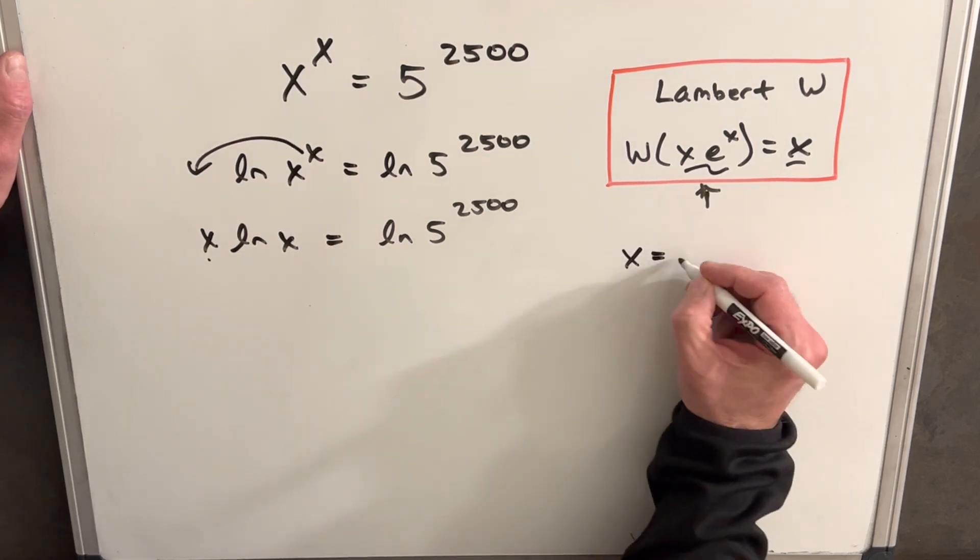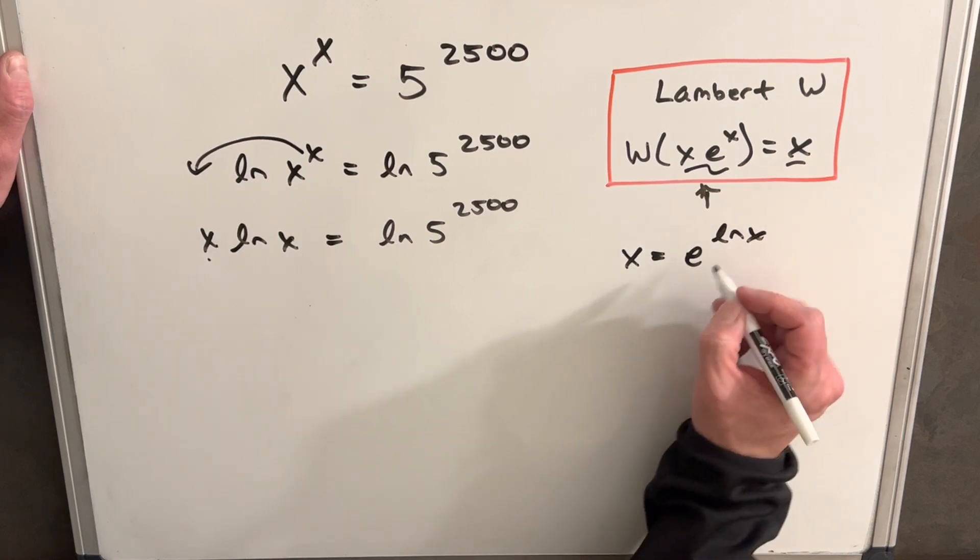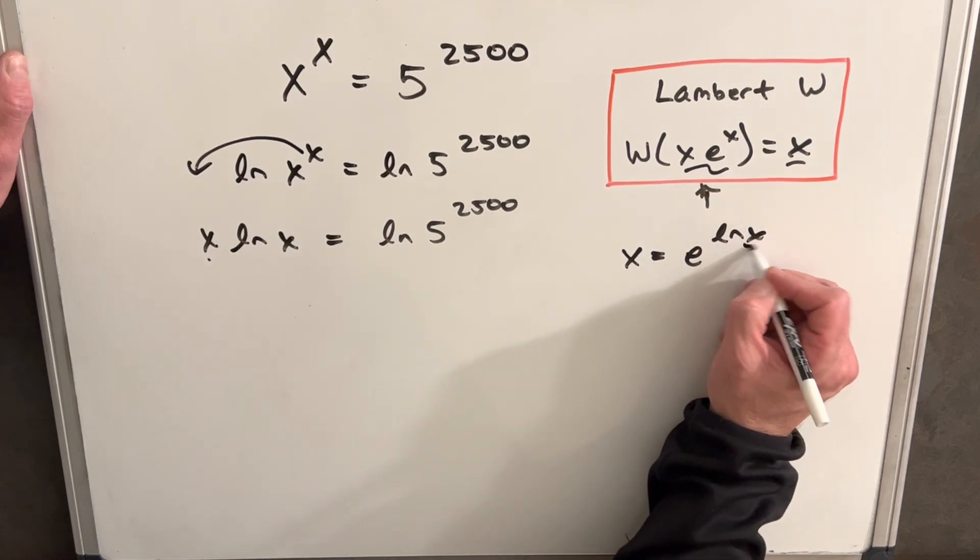we can always do this and write x as e to the ln x, noticing that this would just cancel and we get back our x.